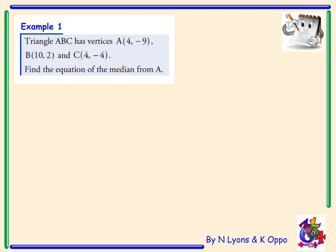Example 1. Triangle ABC has vertices A(4, -9), B(10, 2), and C(4, -4). Find the equation of the median from A.